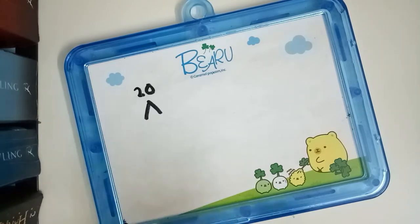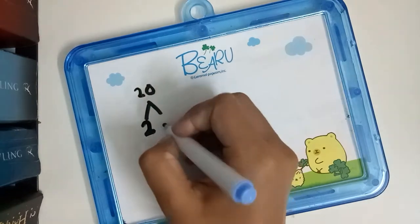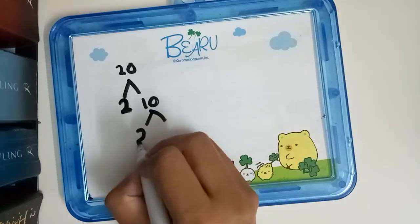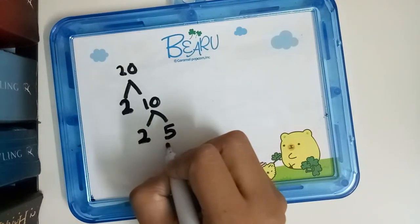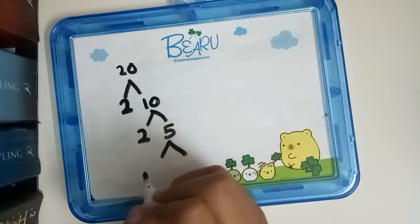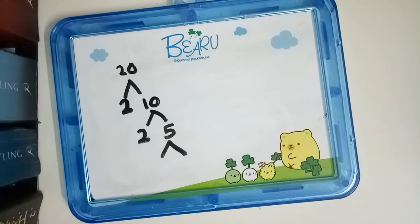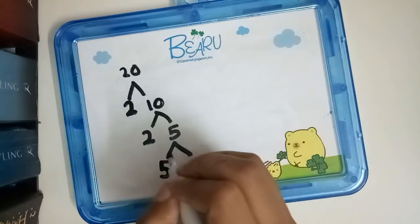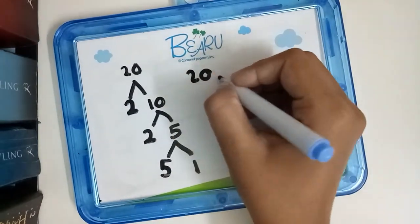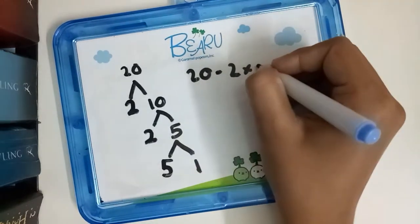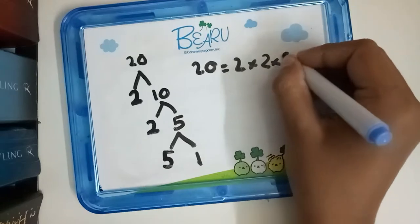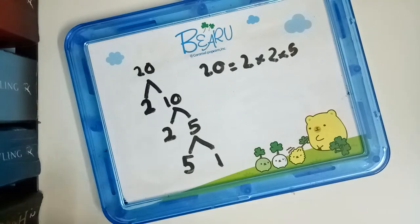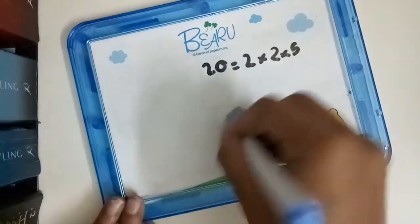We check if 20 is divisible by 2, and it is, so we write a 2 and divide to get 10. Now, is 10 divisible by 2? Yes. Is 5 divisible by 2? No. By 3? No. By 4? No. By 5? Yes. So the factors of 20 are 2 multiplied by 2 multiplied by 5.